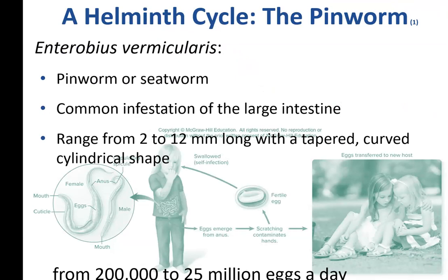The pinworm is a very common infection — it is a roundworm called the seatworm or pinworm, and its technical name is Enterobius vermicularis. The eggs look like little flattened footballs, and the adult gets to be about half an inch long and they're white. Kids are the most common people who get these infections, because they put their hands on everything, stick their hands in their mouths, and don't wash their hands as much as they should. They pass them on over and over again.